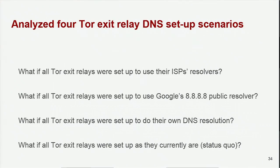Finally, we ran these simulations for four different exit relay DNS configurations in TOR: first, what if all TOR exit relays were set up to use their ISPs' resolvers? Second, what if all TOR exit relays were set up to use Google's 8.8.8.8 public resolver? Third, what if all TOR exit relays were set up to do their own DNS resolution? And fourth, what if all TOR exit relays were set up as they currently are — the status quo?